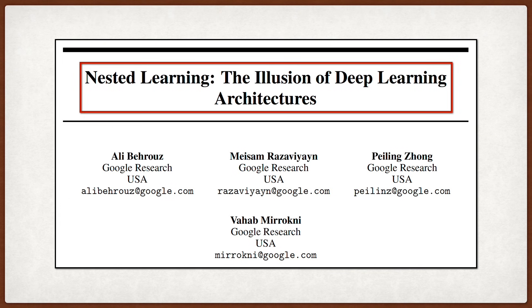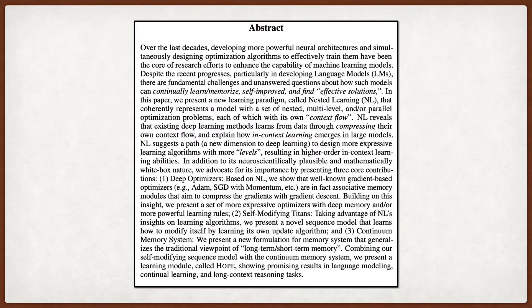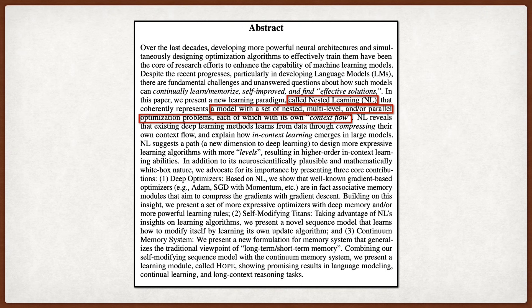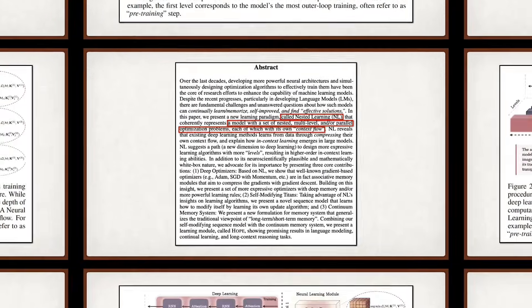The core claim here is pretty wild. They suggest the traditional focus on developing ever deeper neural architectures might be missing a fundamental conceptual piece. They introduce Nested Learning, or NL, a new paradigm that represents a machine learning model not just as a stack of layers, but as a set of nested, multilevel, or parallel optimization problems.